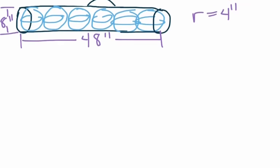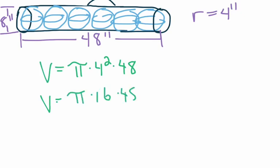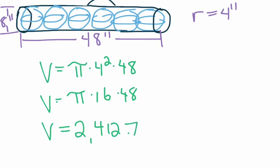For the carrying case: V equals pi times 4 squared times 48. So V equals pi times 16 times 48. For compound figures we focus on approximate values, so we take 48 times 16 times pi, and we get V equal to 2,412.7 cubic inches for the carrying case alone.